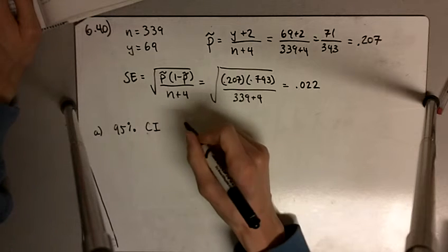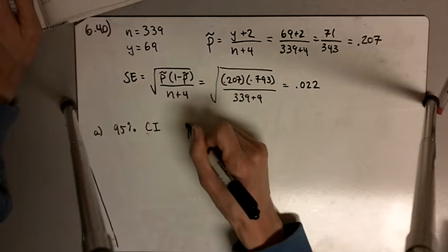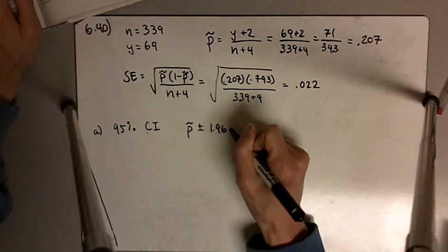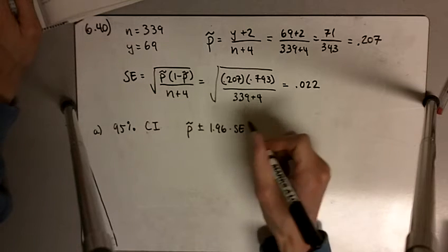So the 95% confidence interval is given by p̂ plus or minus 1.96 times the standard error. So in this case,